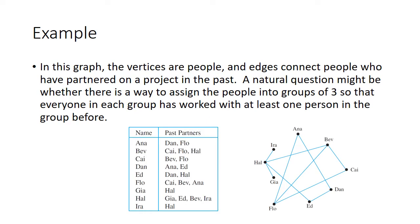Let's look at an example. In this graph, the vertices are people — nine people named for letters of the alphabet — and edges connect people who have partnered on a project in the past. For example, we can see that Bev and Kai have worked together on a project, and Dan and Ed have worked on a project together, which we can also see in their listings in the table.